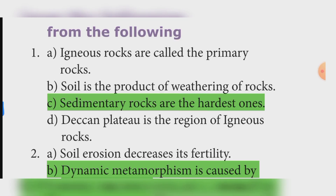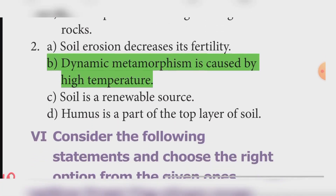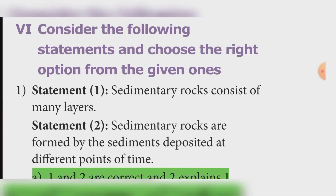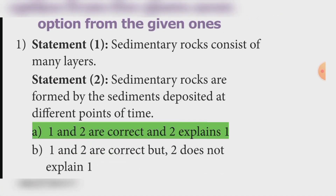Second set: Soil erosion decreases its fertility; Dynamic metamorphism is caused by high temperature; Soil is a renewable source; Humus is a part of the top layer of soil. Answer: Option B — Dynamic metamorphism is caused by high temperature (incorrect statement). Consider the following: Sedimentary rocks consist of many layers (Statement 1); Sedimentary rocks are formed by sediments deposited at different points of time (Statement 2). Answer: Option A — both 1 and 2 are correct and 2 explains 1.